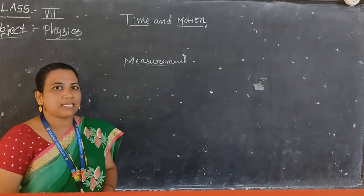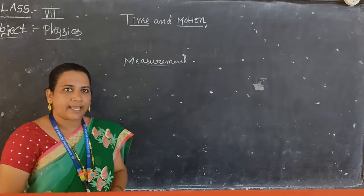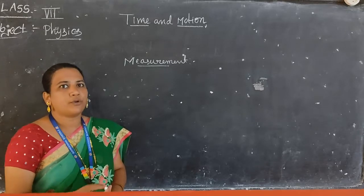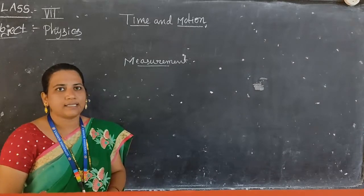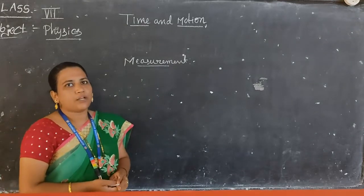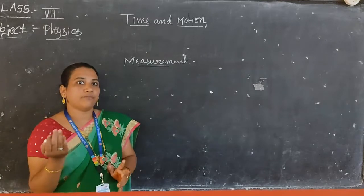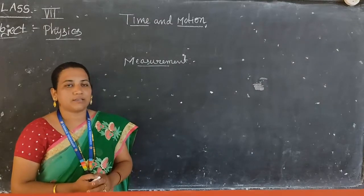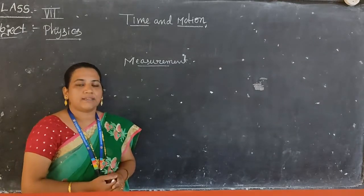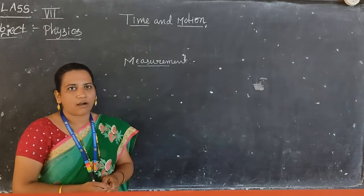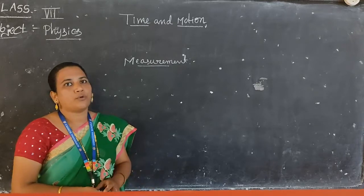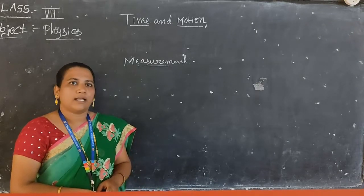What is meant by measurement? Measurement is defined as comparison of an unknown quantity with a known quantity. So if you want to measure anything, whatever known quantity we have, we do comparison with that — that is called measurement. Measurement is defined as comparison of a known quantity with an unknown quantity, and that is called measurement.